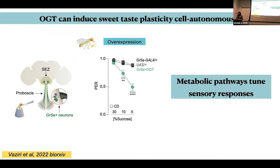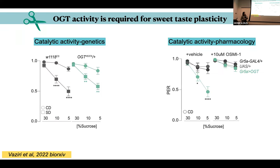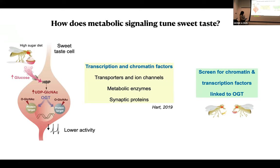When we did the opposite experiment — overexpressing OGT only in the sensory neurons of flies on a control diet — we saw a decrease in taste plasticity similar to what animals on a high sugar diet experience. This metabolic pathway can tune the sensory responses of the cells to the environment, which we usually think happens in interoceptive pathways, but it means that taste cells can use both traditional receptor mechanisms and interoceptive mechanisms. We also found it wasn't just the level of OGT but its catalytic activity: a catalytically dead mutant didn't rescue the taste plasticity, and a drug that blocks OGT activity completely blocked the effect of OGT overexpression.